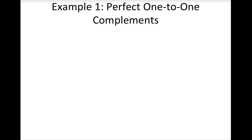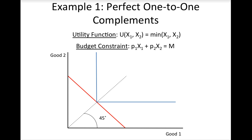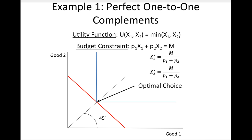For our first example, we will consider goods that are perfect one-to-one complements. The utility function is U of X1 and X2 equals the minimum of X1 and X2, and the budget constraint is P1 times X1 plus P2 times X2 equals income. The indifference curves are L-shaped with corners along a 45-degree line from the origin, and the consumer's optimal bundle is where the corner of the indifference curve just touches the budget line. The consumer's optimal consumption of good 1 is income divided by the sum of prices, and good 2 is the same.